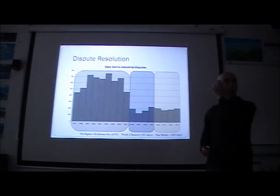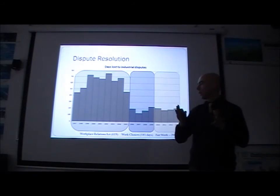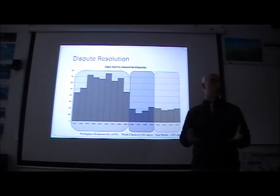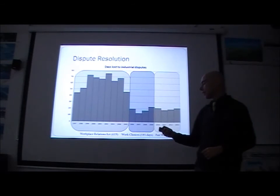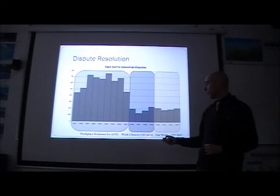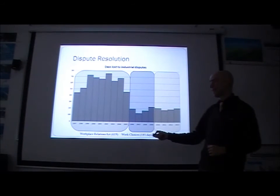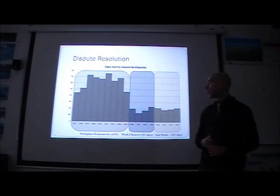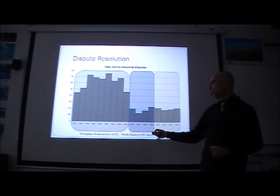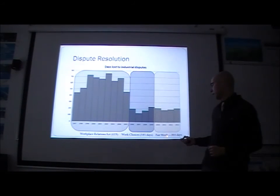There's a graph showing days lost to industrial disputes. Every year there are a certain number of days when workers go on strike, and this data shows how many. It's split roughly into the Workplace Relations period, the Work Choices period, and the Fair Work period. It was quite high during the 1990s and early 2000s under Workplace Relations — about 619 days per year lost. As soon as Work Choices came in, there was a big drop off, down to about 185 days. Under the Fair Work Act it increased slightly to about 203 days, but has remained fairly stable.